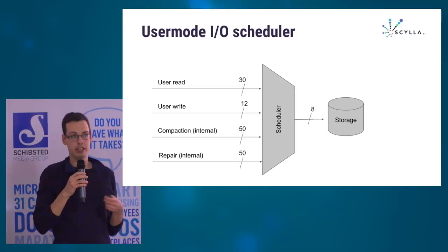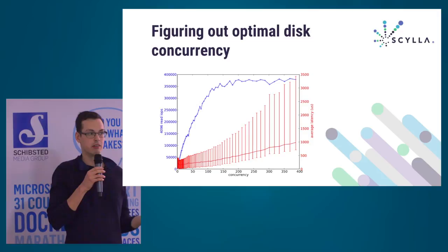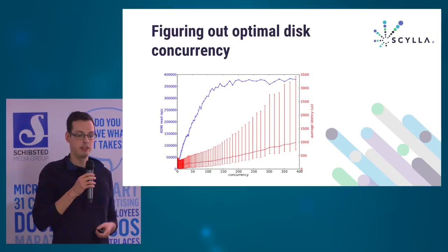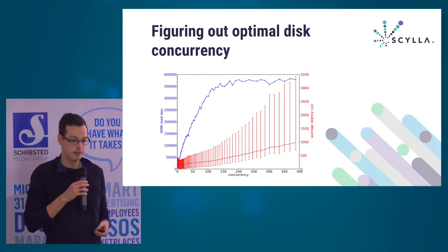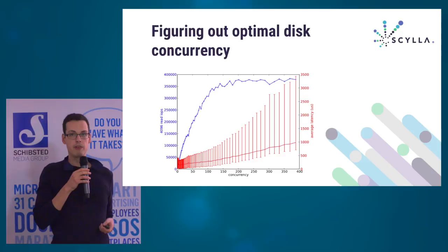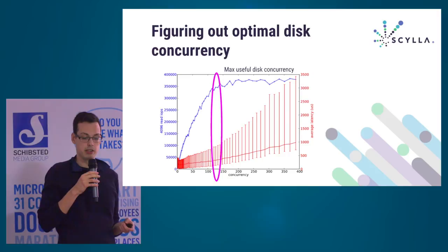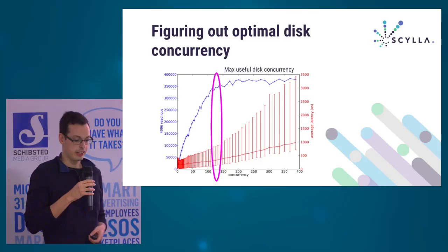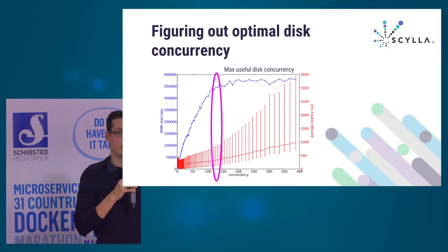This is the I/O scheduler for storage. We're working on a CPU scheduler and eventually a network scheduler as well. How do we know the disk can only handle eight concurrent requests? When you install Scylla, the system will benchmark the disks — throwing loads at them with increasing concurrency. We can see that at the beginning, as we increase concurrency, throughput increases up to a plateau. Beyond that, throughput doesn't increase but latency increases linearly. So there's a particular sweet spot — the number of concurrent requests to send to a disk — and this is what we configure the I/O scheduler with.